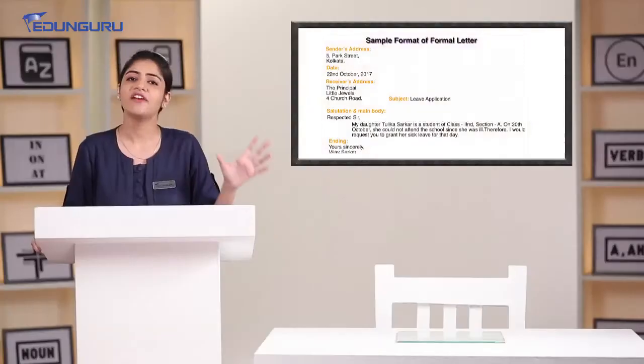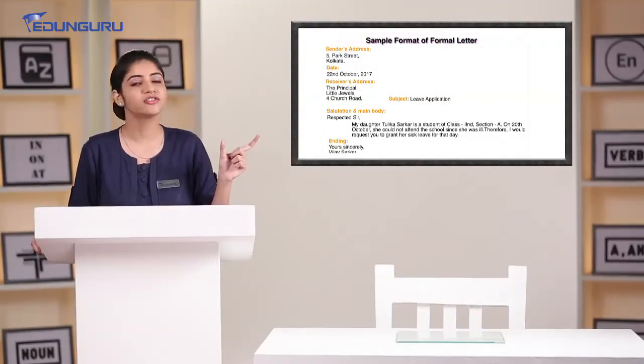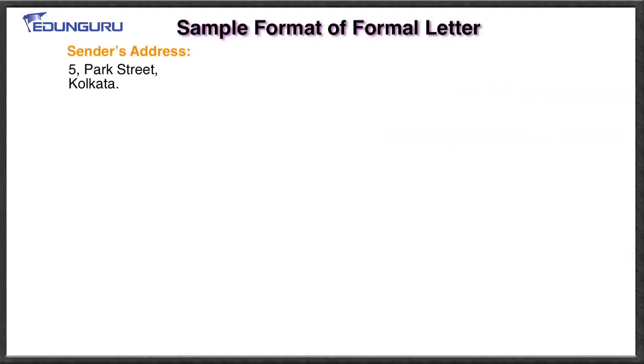To make you understand better, let's learn with the help of a sample format letter. Have a look at the screen — the letter is flashing on the screen. '5 Park Street, Kolkata, 22nd October 2017.' As you can see, firstly the sender's address is written, and just below it, the date on which the writer is writing the letter.